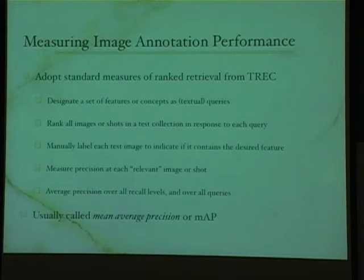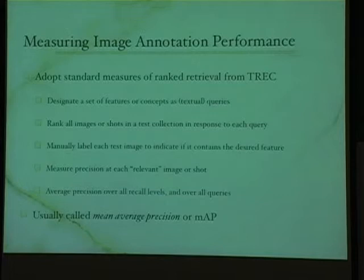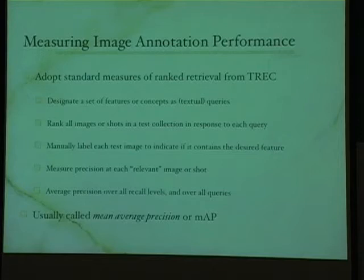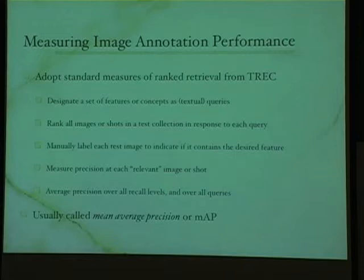How do you measure things? The community decided to evaluate this like information retrieval. Given a collection of images and a query like 'give me images with cars,' the result is a ranked list. At every position where you retrieve a relevant image, you measure how many above that point are also relevant — so if the first is a car, precision is 100%; if the fourth is a car and only two of the four are cars, precision is 50%. The final metric is mean average precision — an average over various recall levels and averaged over all queries. A score of one means perfect; zero means worst.